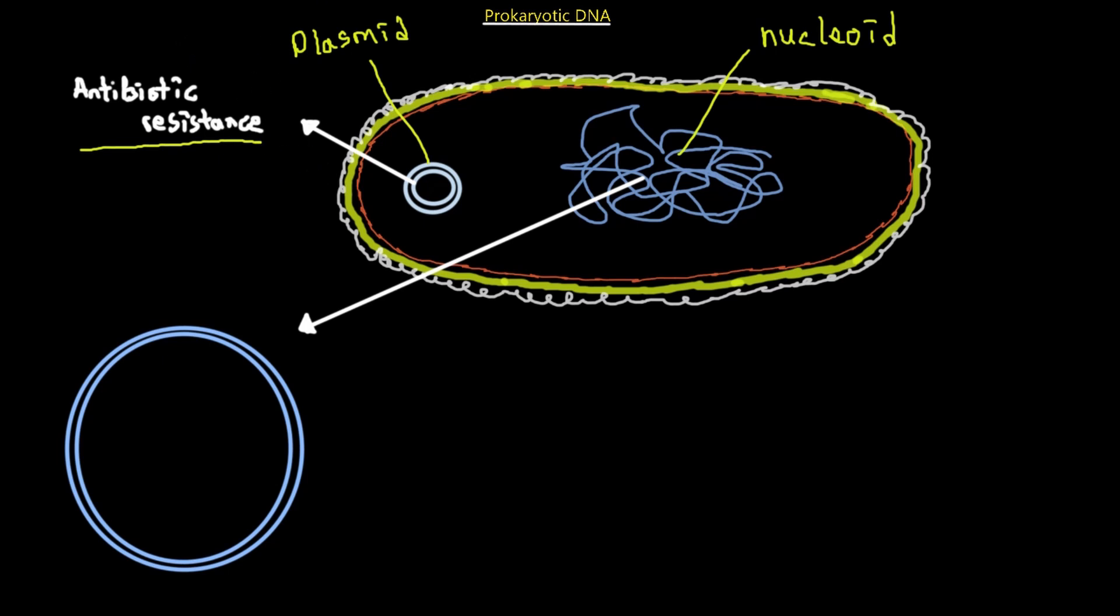And these genes typically code for proteins that would be helpful in antibiotic resistance. So this is why we always say that whenever you're taking an antibiotic, you must finish the entire course completely in order to kill off the prokaryotic bacteria.